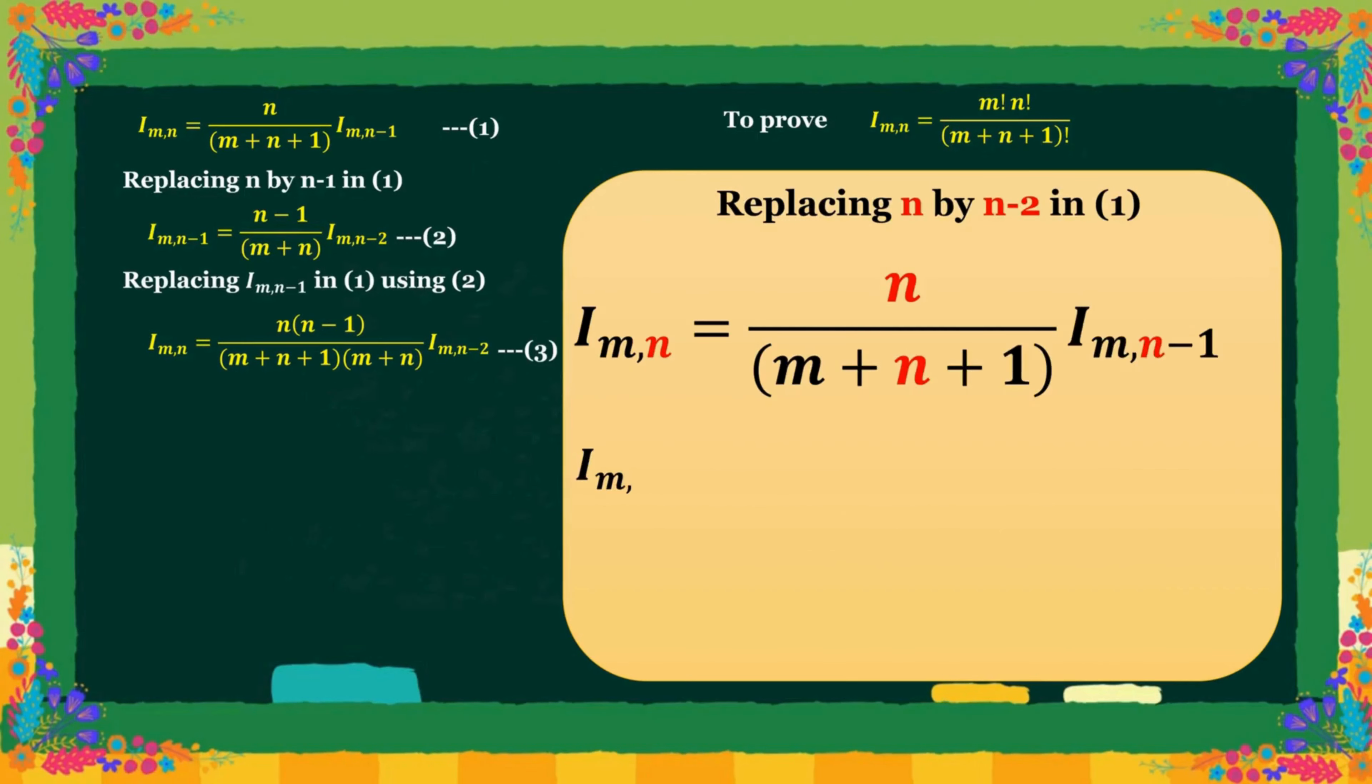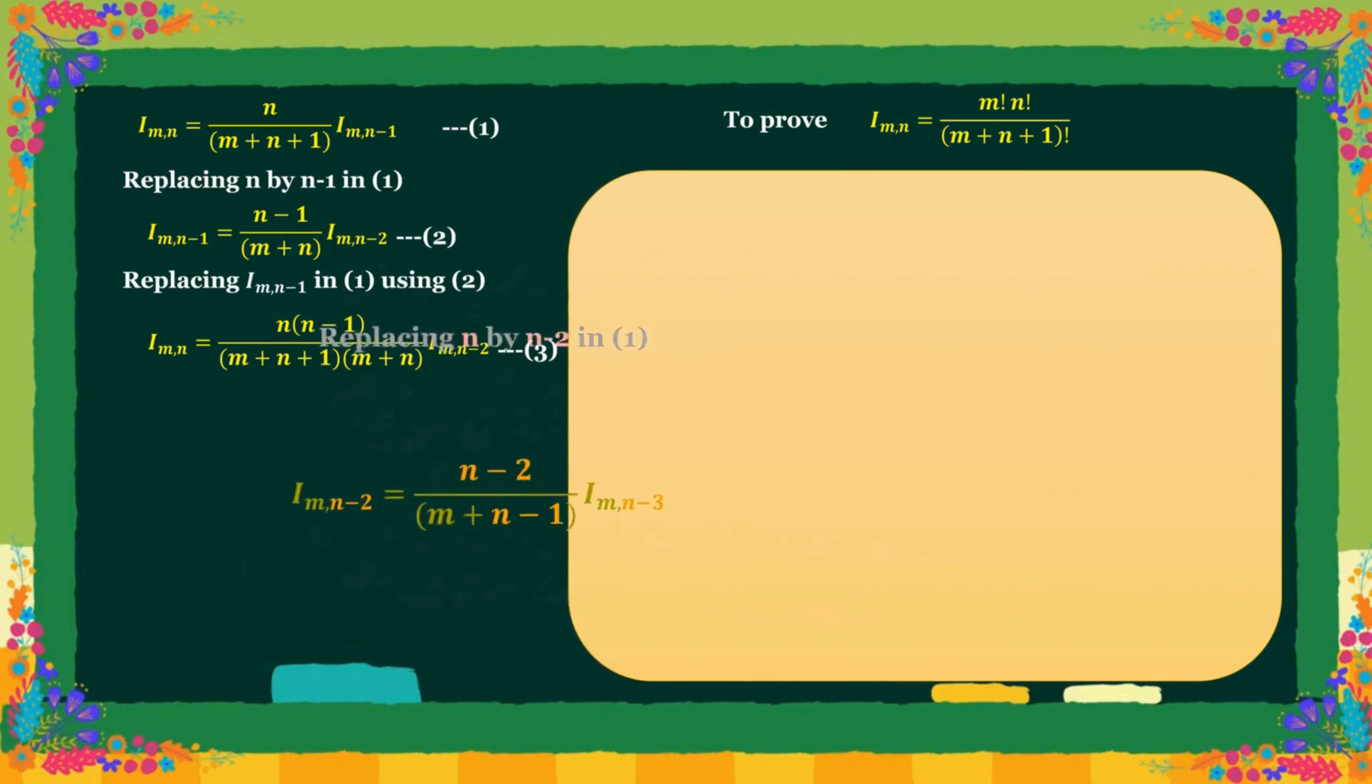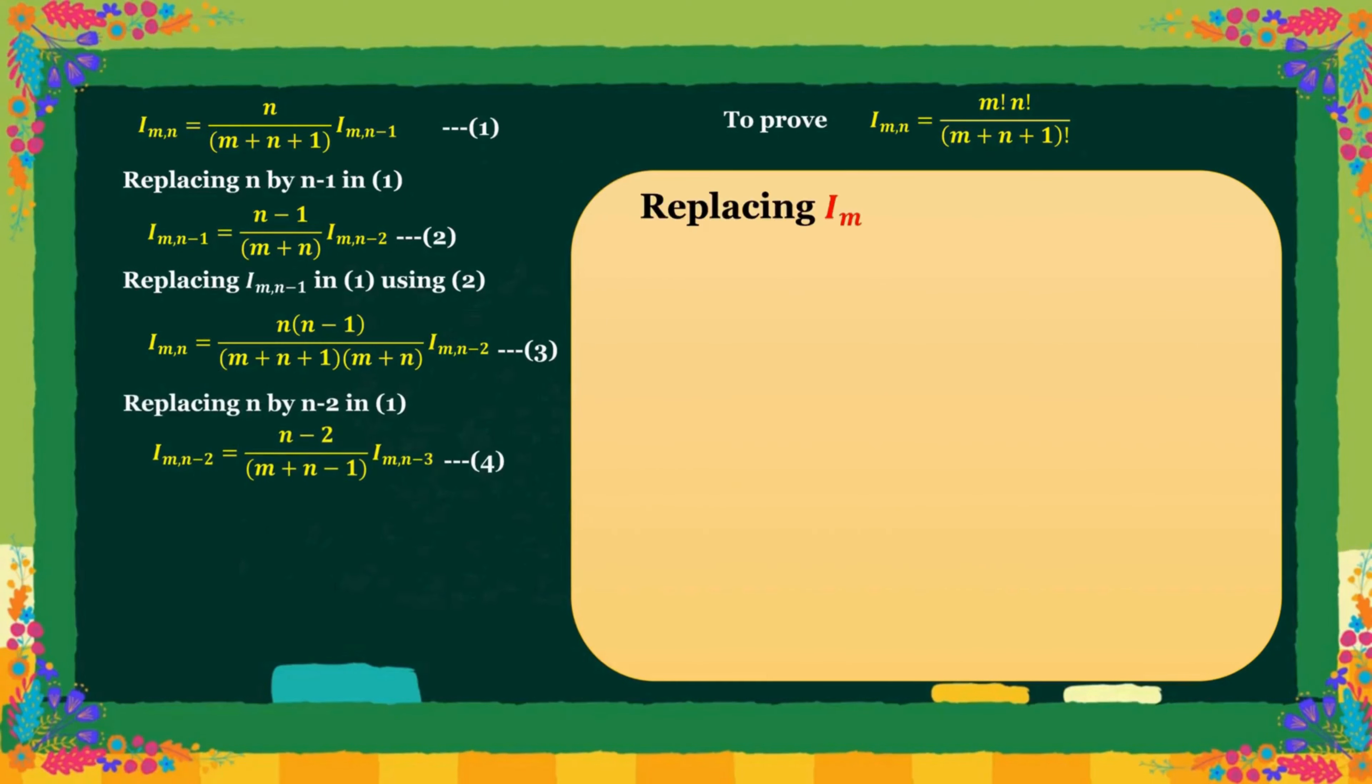Again replacing n by n minus 2 in equation 1, we get I m n minus 2. We mark this value by 4. Inserting equation 3 into 4, we get...